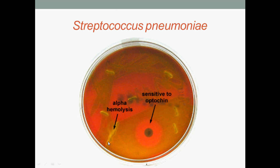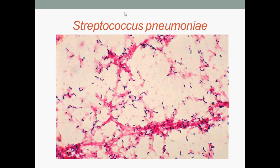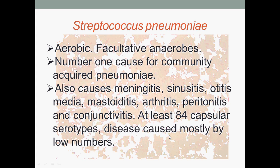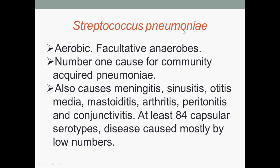Streptococcus pneumoniae on the plate exhibits alpha-hemolysis, also known as green hemolysis — partial hemolysis of blood where the agar under the colony appears dark and greenish. Streptococcus pneumoniae under microscopic view. They are aerobic and facultative anaerobes, and are the number one cause of community-acquired pneumonia. They also cause meningitis, sinusitis, otitis media, mastoiditis, arthritis, peritonitis, and conjunctivitis.